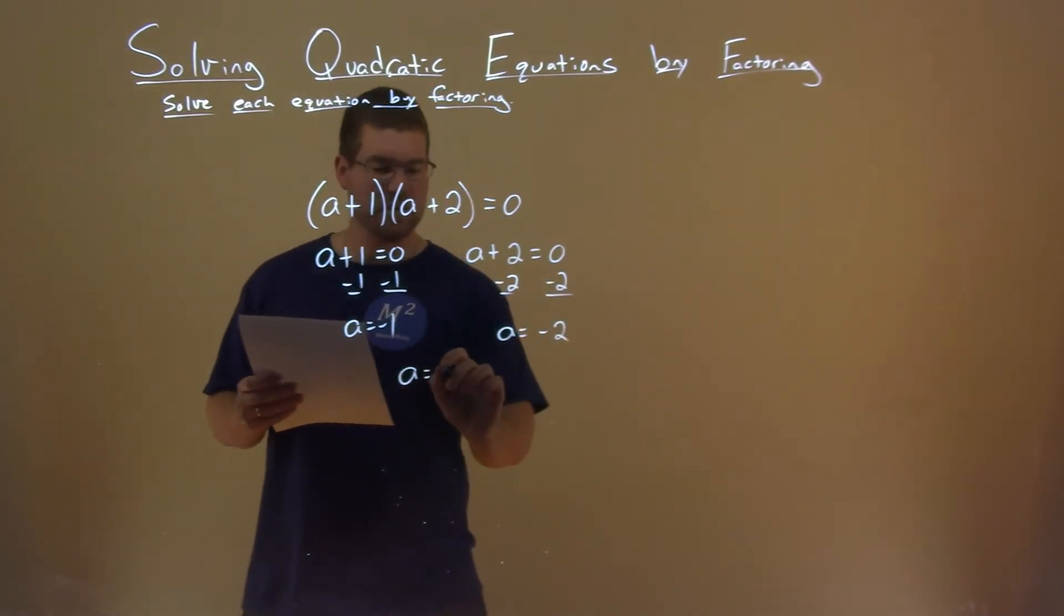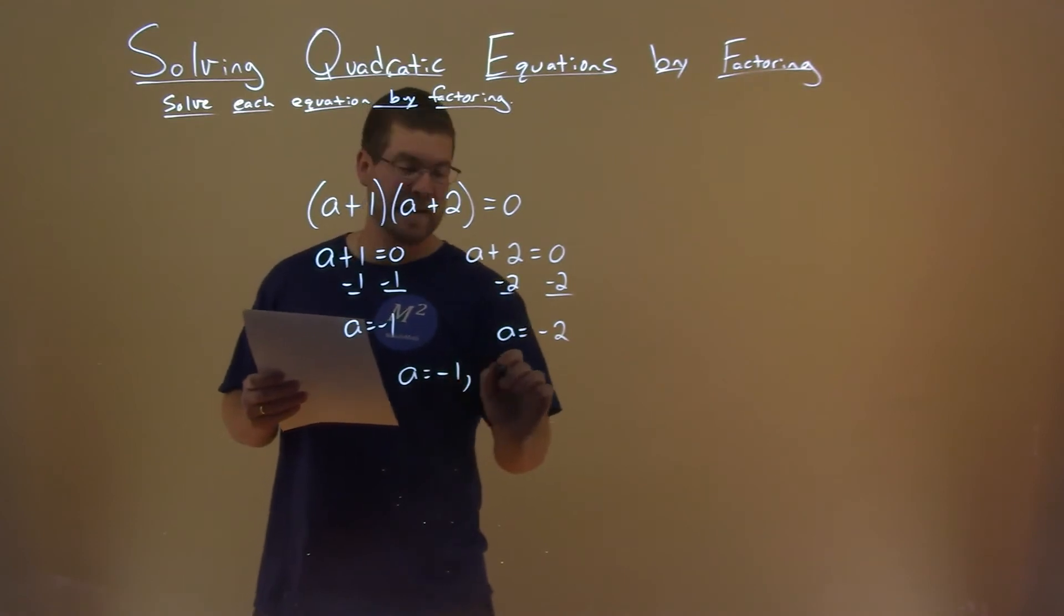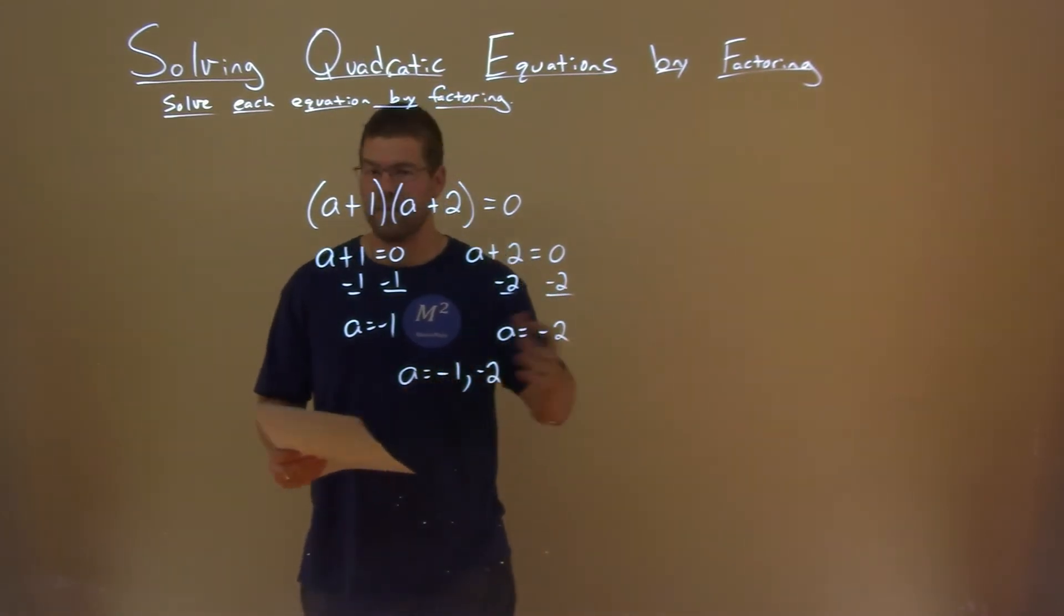Subtract the two from both sides and a equals negative two. And so my two solutions here are just a equals negative one and a equals negative two and that is our final answer.